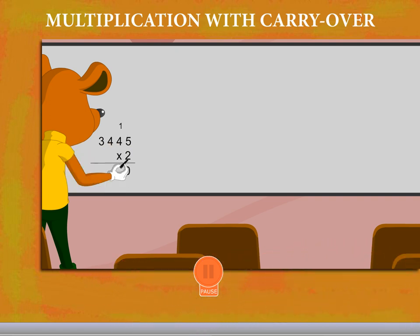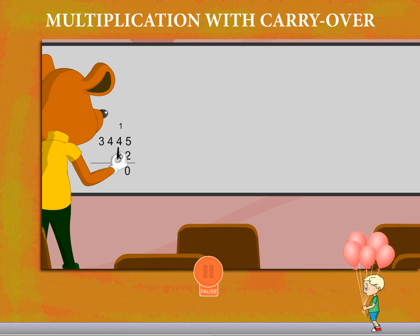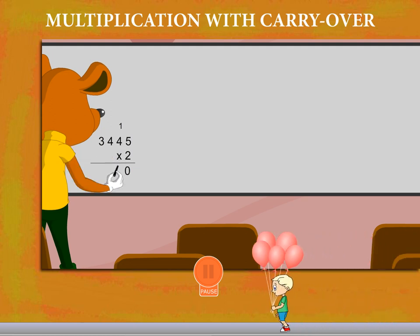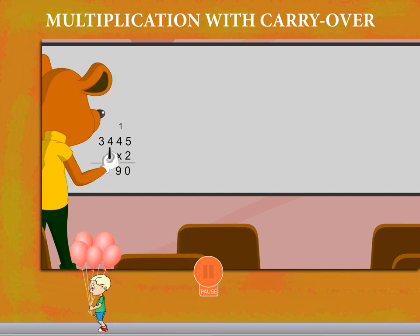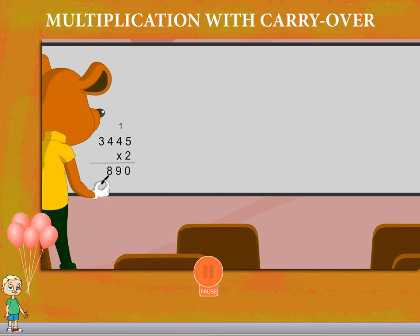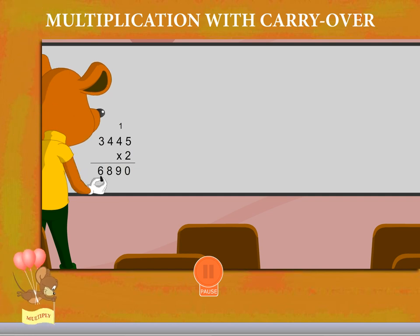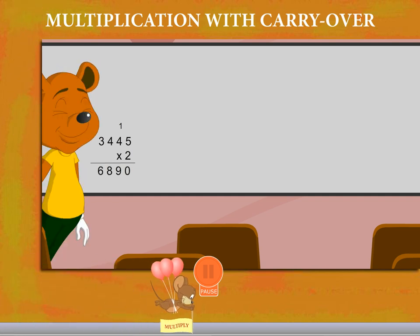He now multiplies 2 by 4 to get 8. He adds the carryover and writes 9. Again he multiplies 2 by 4 in the hundreds place and gets 8, and finally multiplies 2 by 3 to get 6. He writes the answer 6,890.